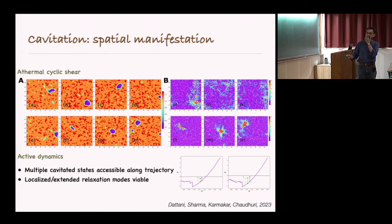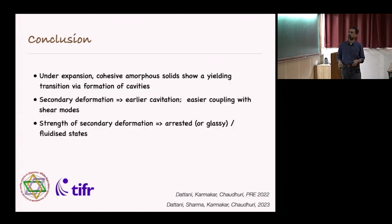For example, in the active mode dynamics where the system is glassy, you have very localized deformations. Where the system is yielding for the cyclic shear, you have very expanded shear band like structures that are forming.